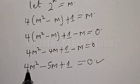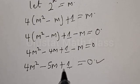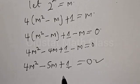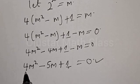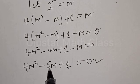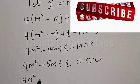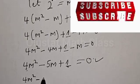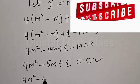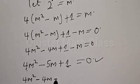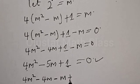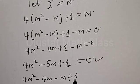The coefficient of m squared is 4. Multiplying 4 by 1 gives 4. We find two numbers whose product is 4 and whose sum is minus 5. Therefore we have 4m squared minus 4m minus m plus 1 equal to 0.